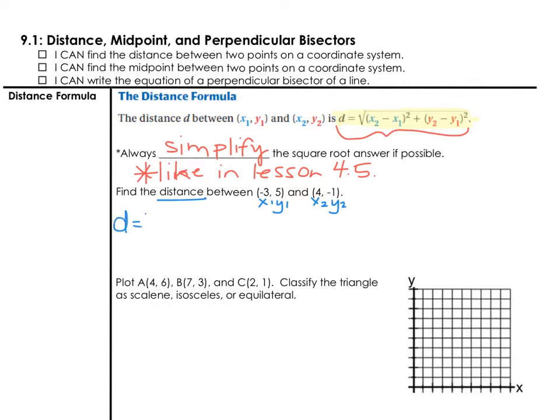Distance equals—it's a really big square root answer, so we're going to start with a really big square root. Take x2 minus x1. That would be 4 minus (-3), and we're going to square that answer. We'll add to that y2 minus y1, which is -1 minus 5. Like everything we do, attention to detail is going to matter. Watch your parentheses and when you have two negatives in a row.